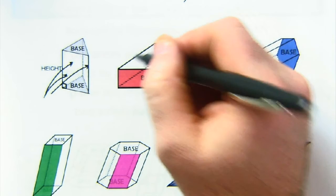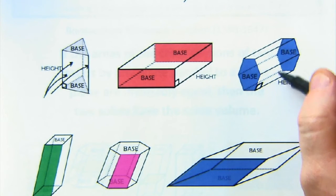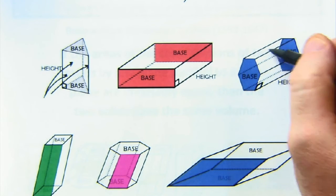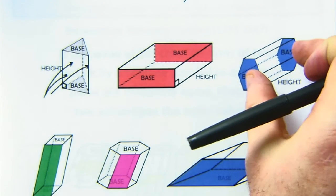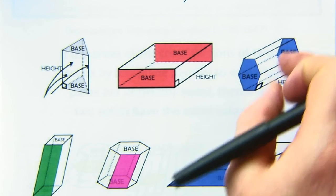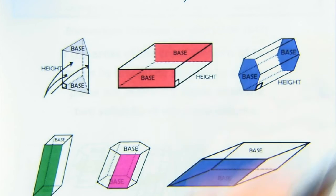Here the lateral faces would be the four rectangles. Here the lateral faces would be the six rectangles. So you have bases as faces and lateral faces as well.